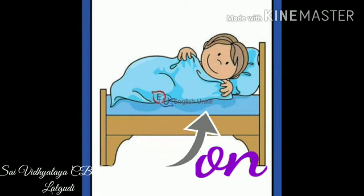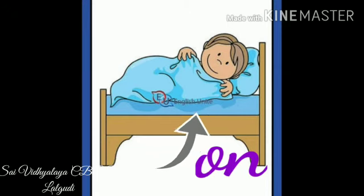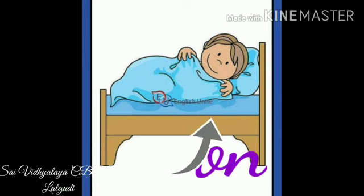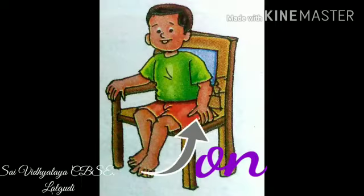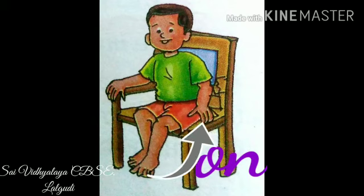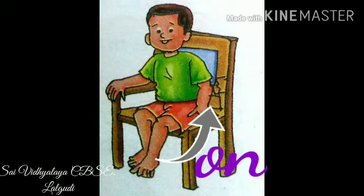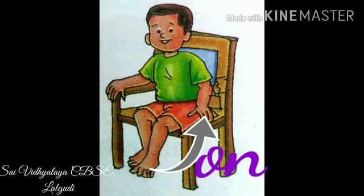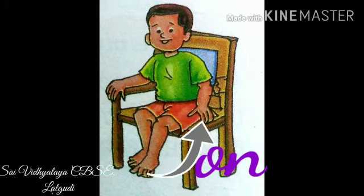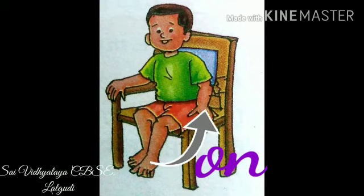Look at this boy. What is the boy doing? Lying. Where is he lying? Lying on the bed. See this boy — the boy is sitting on the chair.